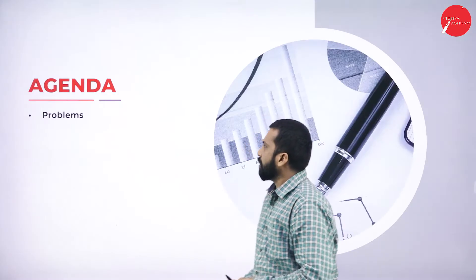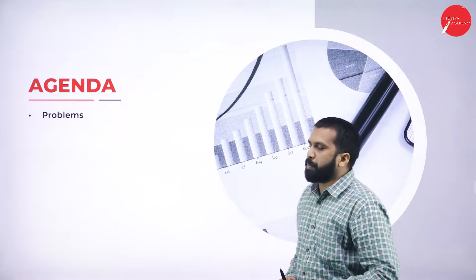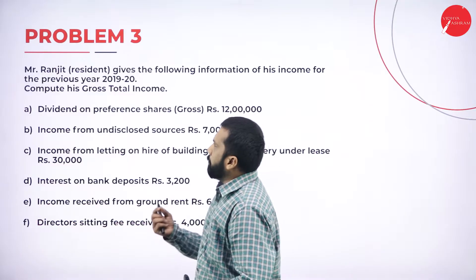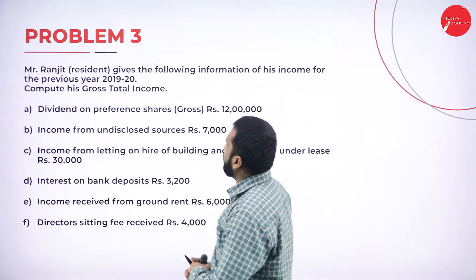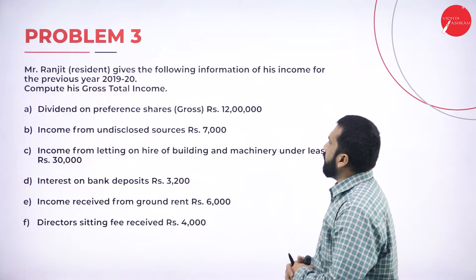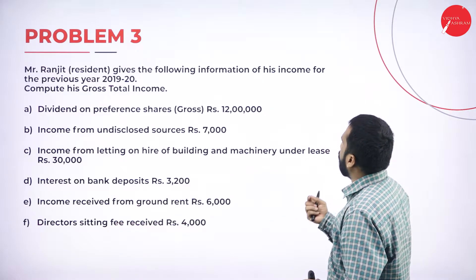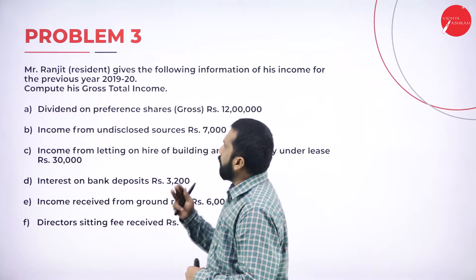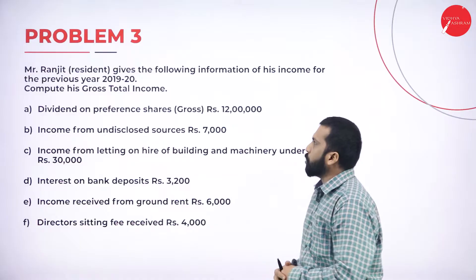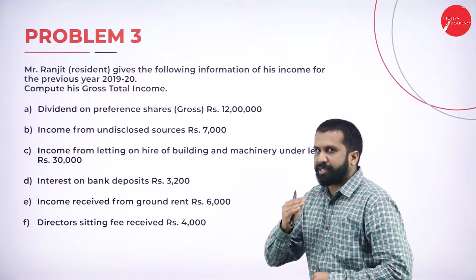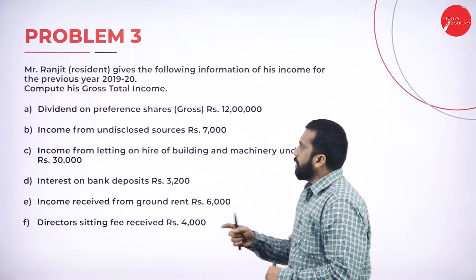The agenda is very simple — we'll go through problems. Problem number three: Mr. Ranjit, a resident, meaning it is an individual problem. He gives the following information of his income for the previous year 2019-20. We need to compute his gross total income. We'll go one by one and understand the concepts. Now, dividend on preference shares — let's look at that.